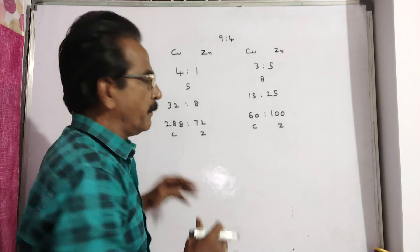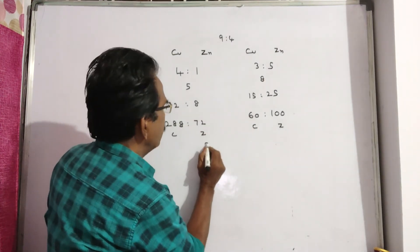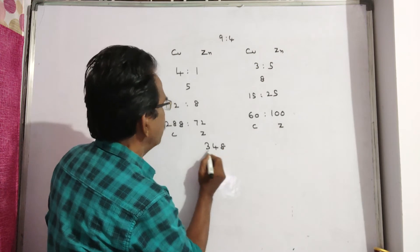Now, if these two quantities are mixed, copper plus copper: 288 plus 60 equals 348.